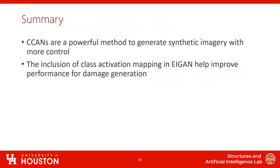To summarize this last part: cycle-consistent GANs are a powerful method to generate synthetic imagery with more control. The inclusion of class activation mapping in IGAN helps improve performance for damage generation. My student is going to be presenting this at IWSHM next March. I'd like to thank my collaborators — Bill Spencer from UIUC and Yasutaka Narazaki from ZJUI in China — and my students for their contributions. Thank you everyone.